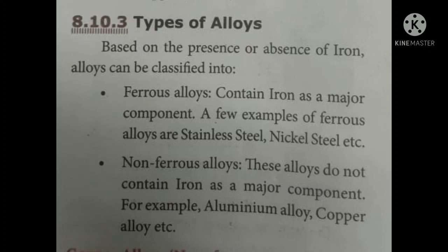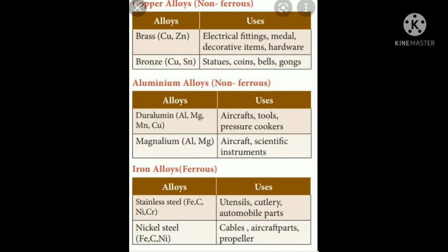There are two types based on the presence and absence of iron. Next, we can see the different types of alloys. In the textbook, three metals are explained: copper, aluminium, and iron. For the alloys of copper, the major ones are brass and bronze. Bronze is used in electrical fittings, medals, decorative items, hardwares, statues, coins, bells, and gongs.